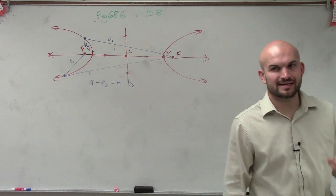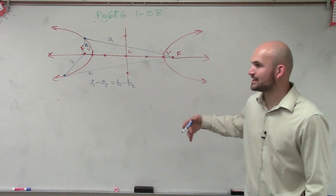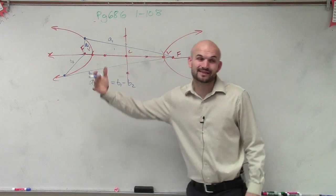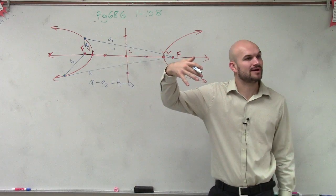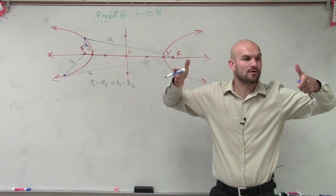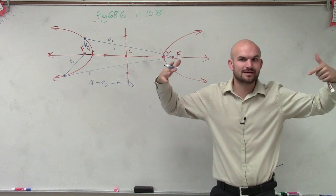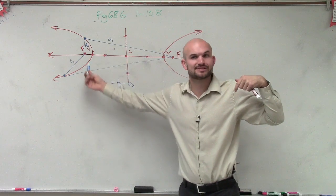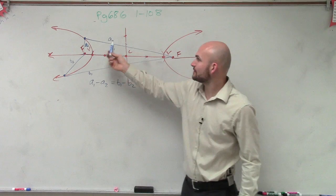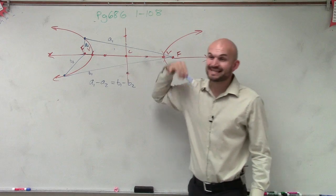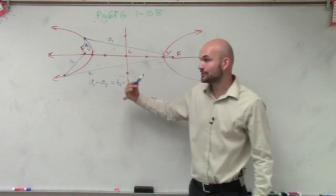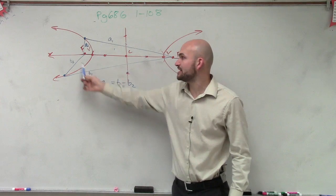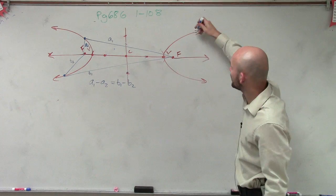So we're not going to be getting that much deeper into it. But what you guys can understand is now, for an ellipse, it was the sum was constant. You took the distance to your two foci from any point, and it was equal. Now, for an ellipse, it's the difference of your two distances to your foci. So the difference of a1 minus a2 is the exact same value as the difference between b1 and b2.